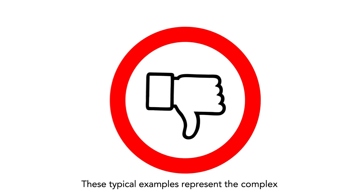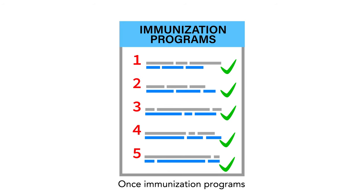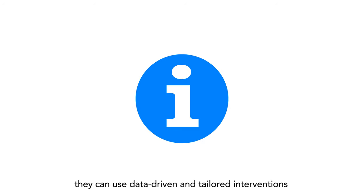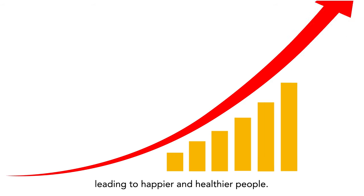These examples represent the complex issues behind low uptake. Once immunization programs have a better understanding of these issues, they can use data-driven and tailored interventions to strengthen population trust in vaccination and increase vaccine demand and uptake, leading to happier and healthier people. Thank you.